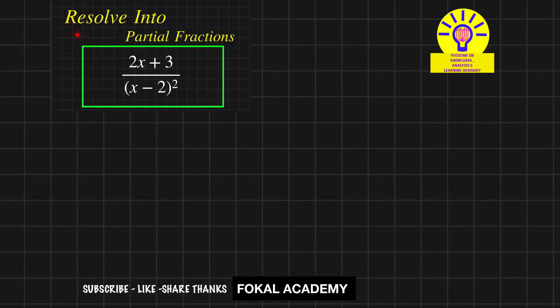In this problem, we'll resolve into partial fractions the given expression: 2x + 3 divided by (x - 2)². In the numerator, degree is 1 and the denominator degree is 2. Since degree of numerator is less than the degree of denominator, partial fraction can be resolved.